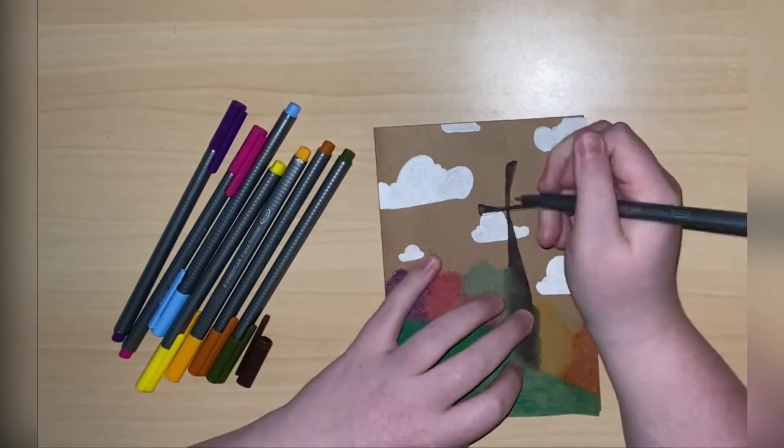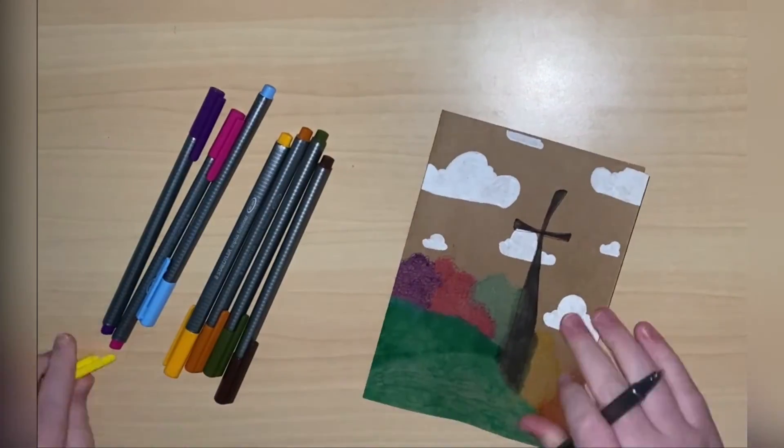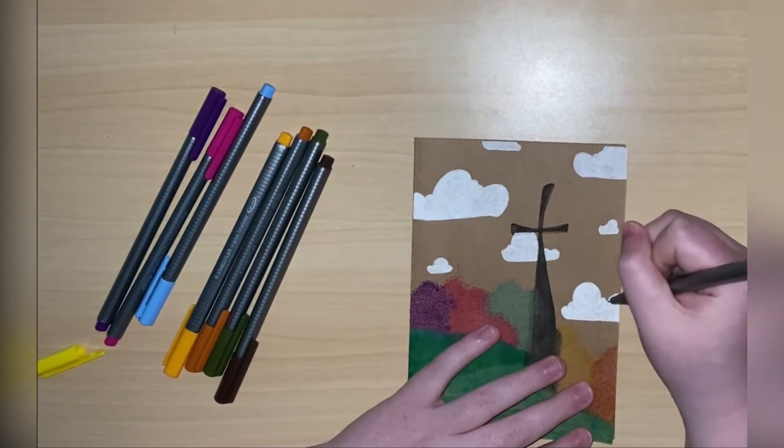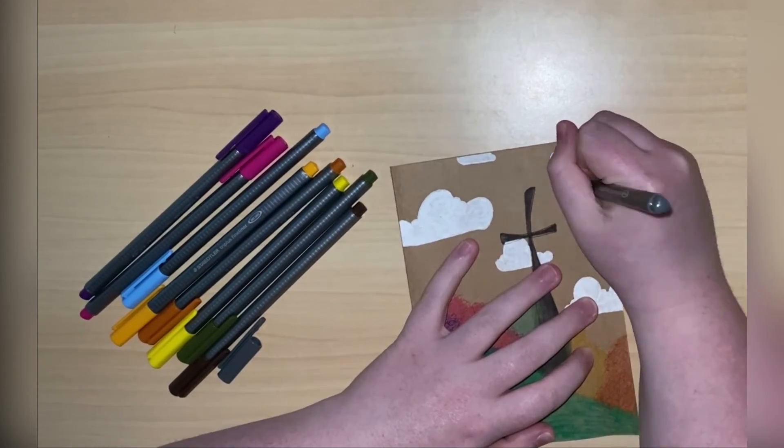Okay, so outline the cross, outline the clouds, add a few birds.